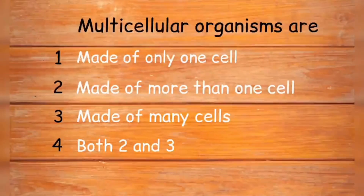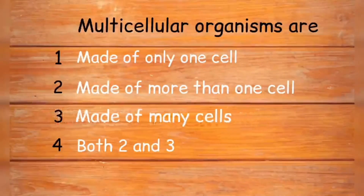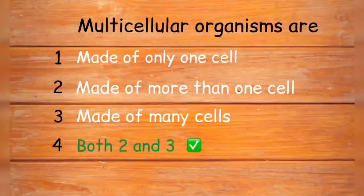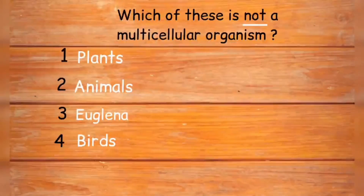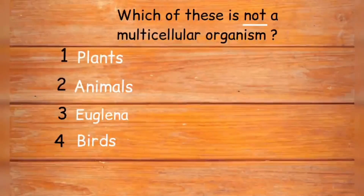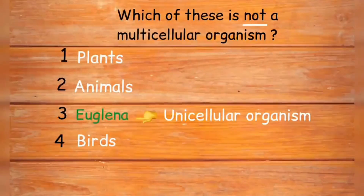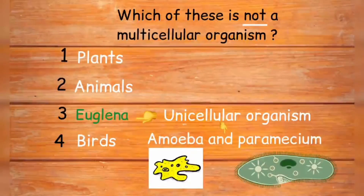Multicellular organisms are those made up of more than one cell, and we can also say they are made up of many cells. Option four is the right answer. Which of these is NOT a multicellular organism? Options are plants, animals, euglena, and birds. Plants, animals, and birds are multicellular organisms because they are made up of many cells, while euglena is a unicellular organism. Along with euglena, amoeba and paramecium are also unicellular organisms. These examples are extremely important to keep in mind.